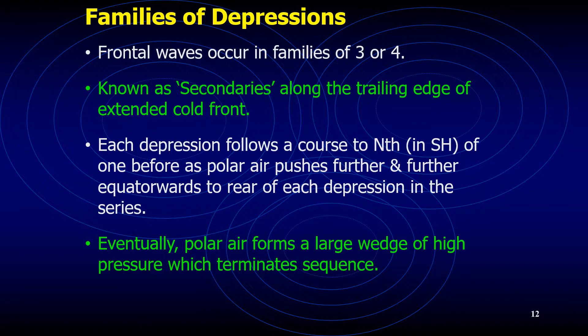Depressions often occur in families of three to four. Once one depression occurs, it lasts about five to seven days and then dies. They are followed by second or third depressions, known as secondaries, which trail along the edge of the extended cold front from the previous depression. Each depression follows a course to the north — in the southern hemisphere — of the one before, as polar air pushes further equatorward. Eventually, polar air forms a large wedge of high pressure which terminates the sequence.